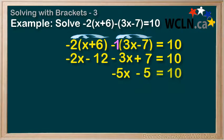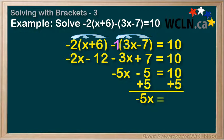So now our question looks much more manageable. To isolate the x, we want to get rid of the negative 5. So let's add 5 to both sides. On the left, we have negative 5x. And on the right, we have 10 plus 5 is 15.